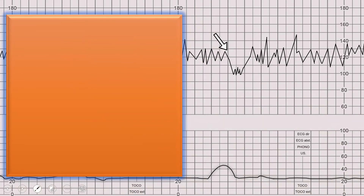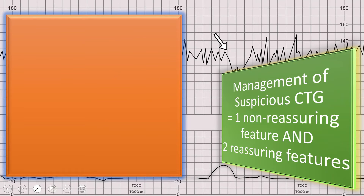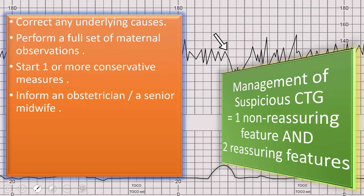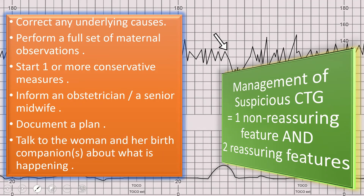For suspicious CTG — meaning one non-reassuring feature and two reassuring features — we have to correct any underlying cause such as hypertension or uterine hyperstimulation. We perform a full set of maternal observations, start one or more conservative measures, and inform an obstetrician or senior midwife. We document a plan for reviewing the whole clinical picture and CTG findings, then talk to the woman and her birth companions about what is happening, taking her preferences into account.